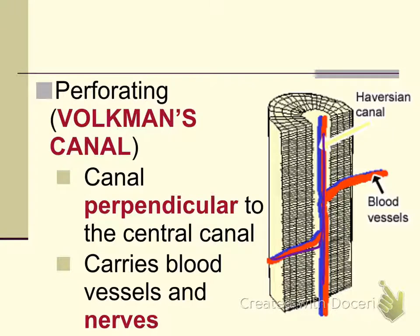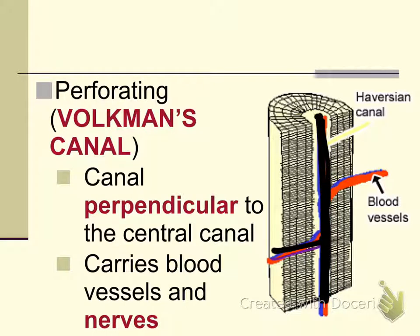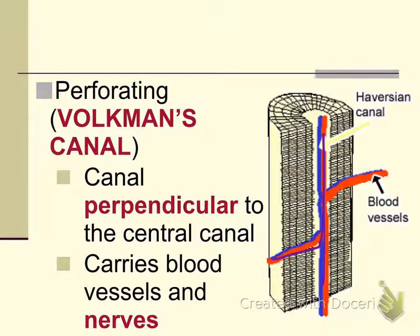Running perpendicular to the central canal (Haversian or osteonic canal) is the Volkman's canal, also called the perforating canal. The function of the Volkman's canal is to connect central canals together — each osteon has a blood vessel supplying it, and the Volkman's canal connects all of the blood vessels of the osteons together.